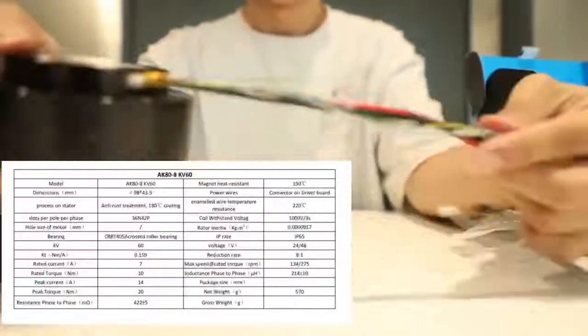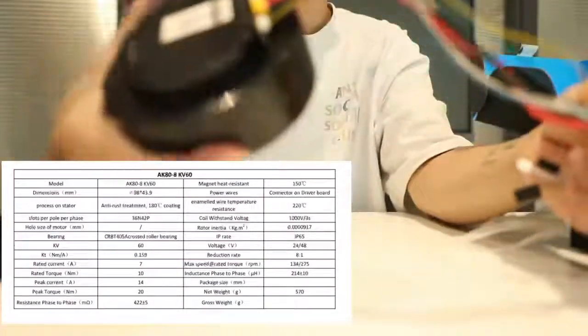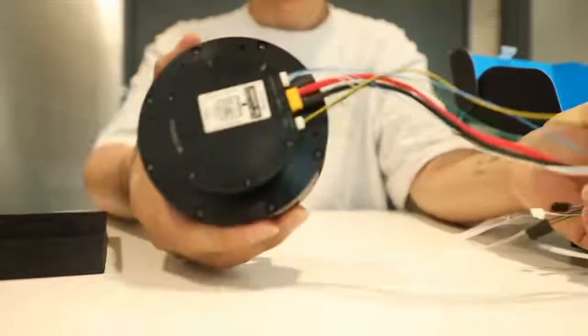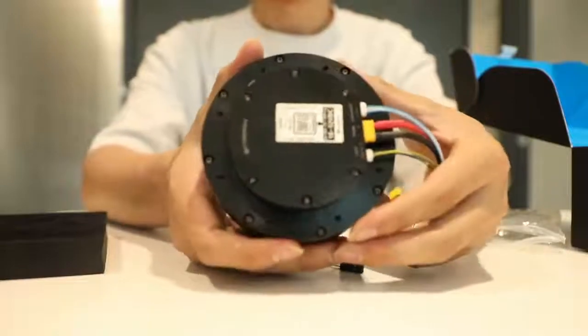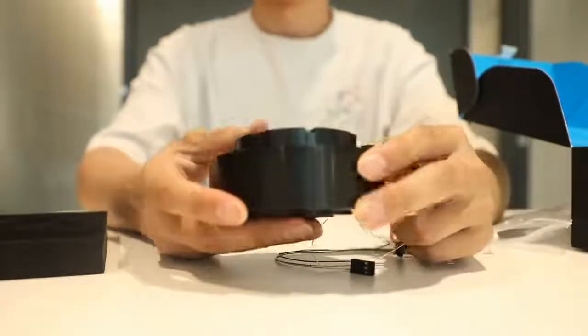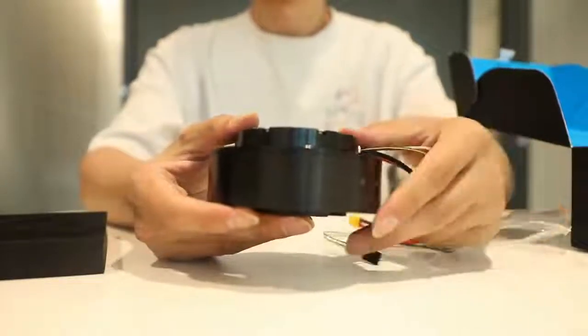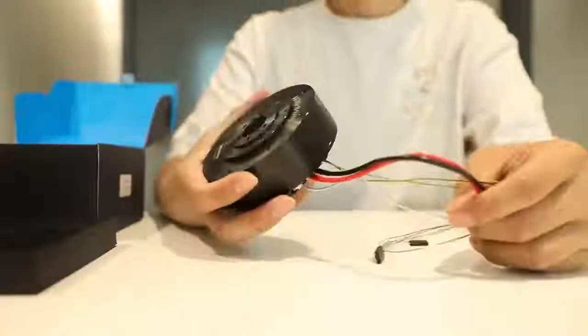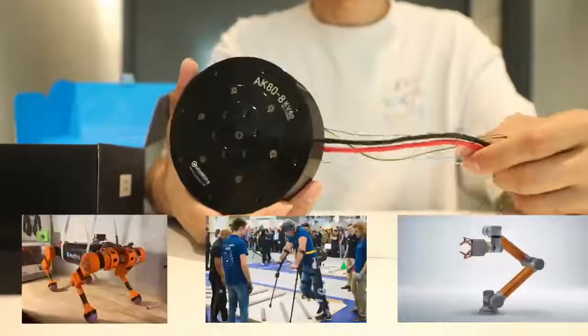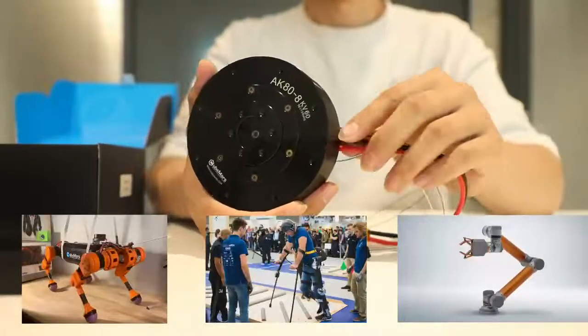Here are some parameters of the motor you need to know. Take a look at the back - a big integrated driver board with dual encoder and temperature sensor inside, with 8 to 1 reduction ratio. All these features combine in only a 570 gram weight module. Here are some application fields of our motors.